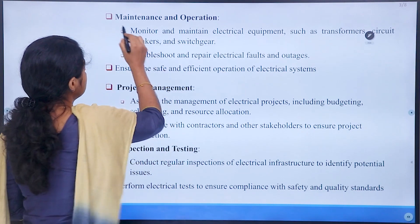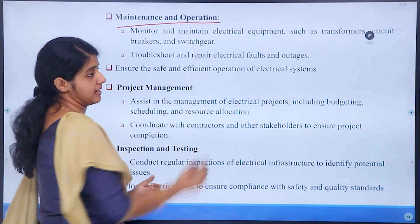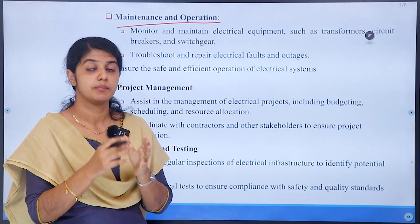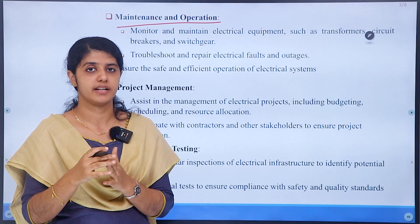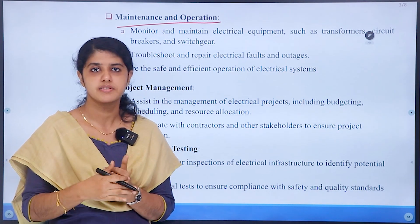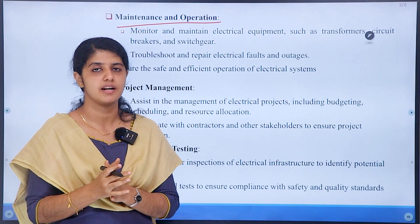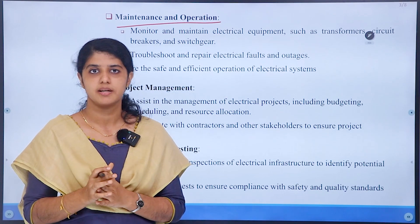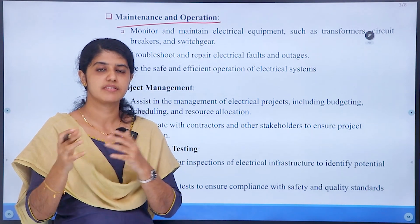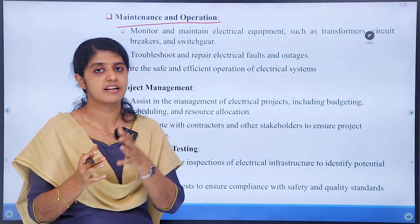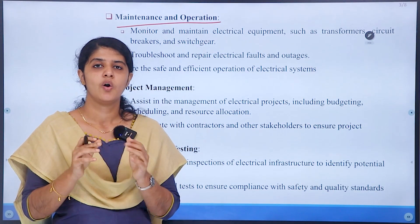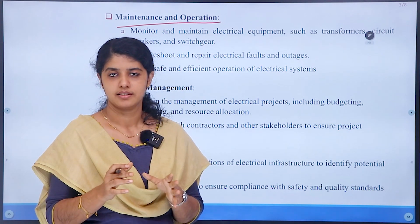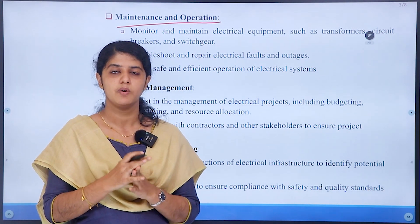Then, maintenance and operation. In a distribution system, the maintenance includes circuit breakers, switchgears, and their release. That is why the power lines are kept going on.